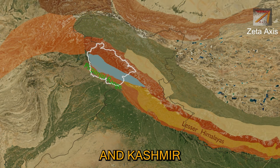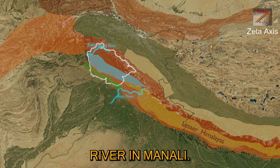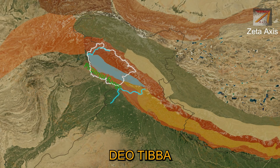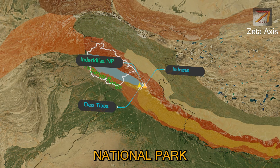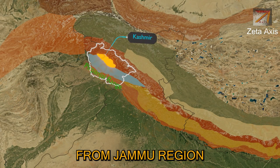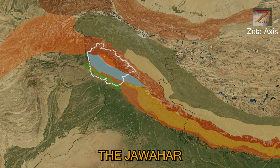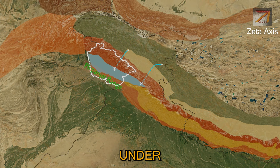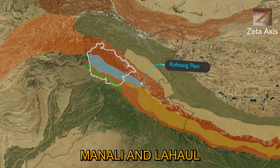The Lesser Himalayas in the Jammu and Kashmir region is called the Pirpanjal range. It extends from the Kishanganga river in the north to the Beas river in Manali, making it the largest section of Lesser Himalayas. Deo Tibba and Indrasan are the two most important mountain peaks of the Pirpanjal range. Inderkilla National Park is also located in the Pirpanjal range. The Pirpanjal separates the Kashmir valley from the Jammu region, and therefore there are many passes connecting both regions. The Jawahar Tunnel under Banihal pass connects Banihal and Qazigund, while the Atal Tunnel under Rohtang pass is also located in the Pirpanjal range.